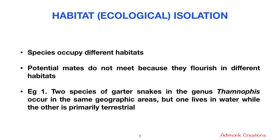In habitat or ecological isolation, species occupy different habitats, so potential mates do not meet each other because they flourish in different habitats. An example is two species of garter snakes in the genus Thamnophis that occur in the same geographical areas, but one lives in water while the other is primarily terrestrial. The two do not come together, so mating does not happen.